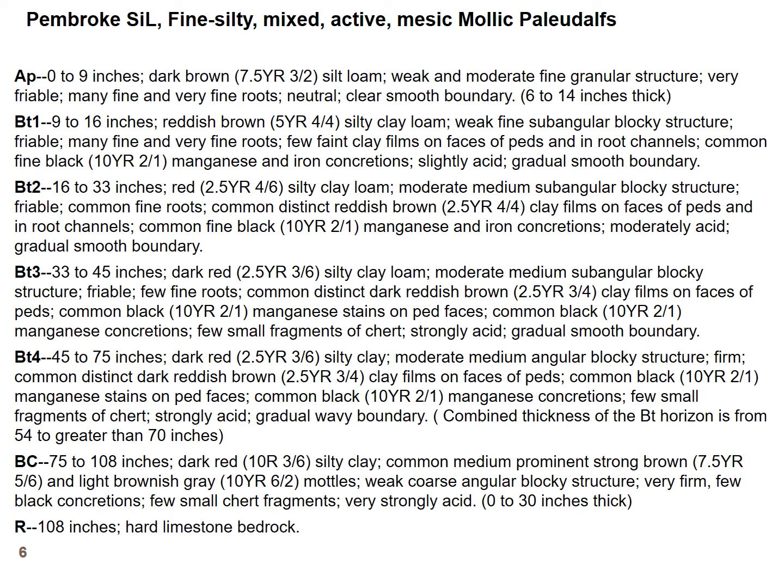This is what we end up coming up with — a description of a soil. At the surface we have a plowed surface horizon from zero to nine inches: the color is dark brown, the texture is silt loam, we have granular structure which is very friable, meaning soft and easily crushed, with many to fine roots, a neutral pH, and a clear smooth boundary — meaning the transition between the Ap and the Bt1 horizon is smooth and easy to see. Then it goes through to describe a series of B horizons with a little T symbol.